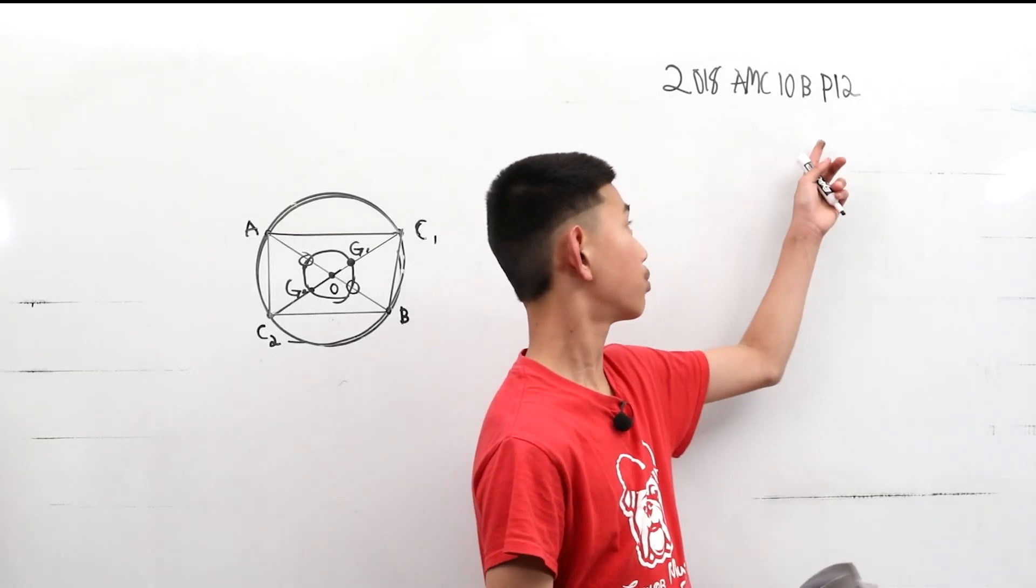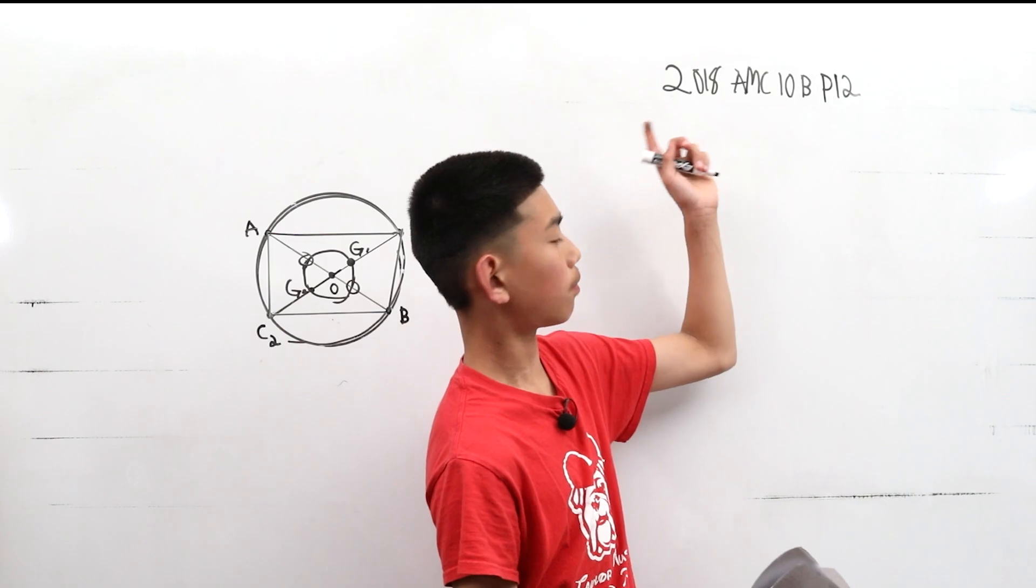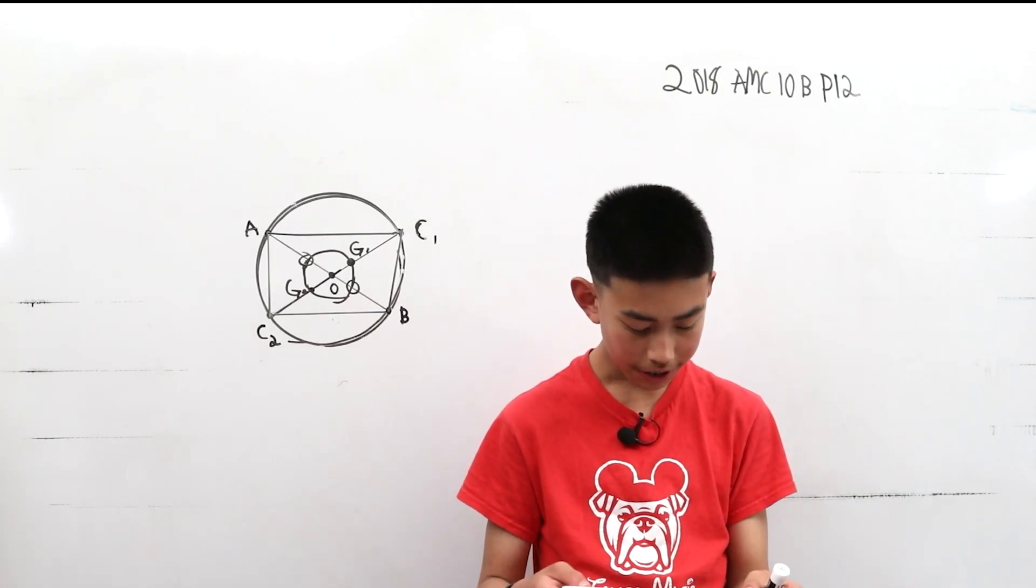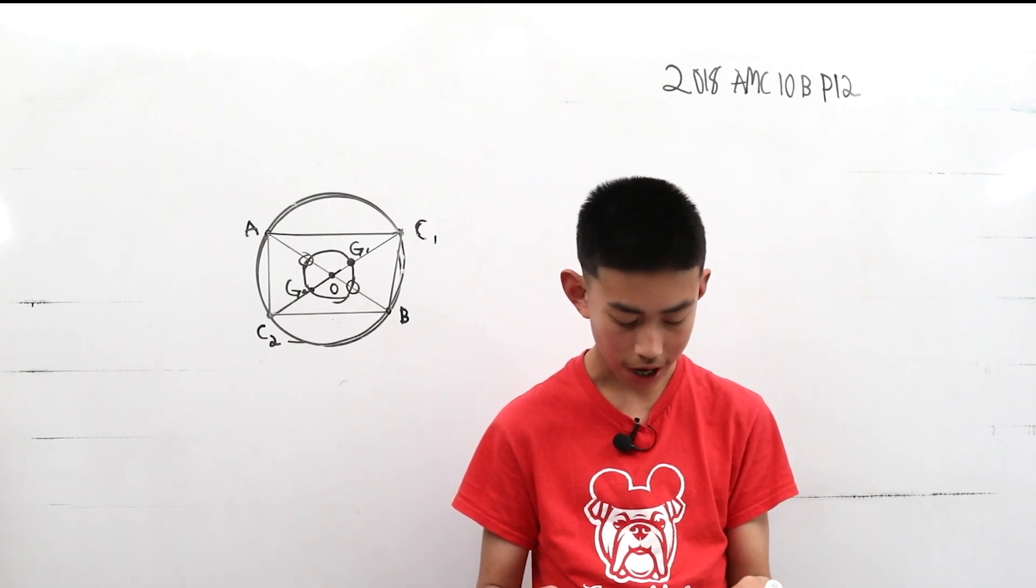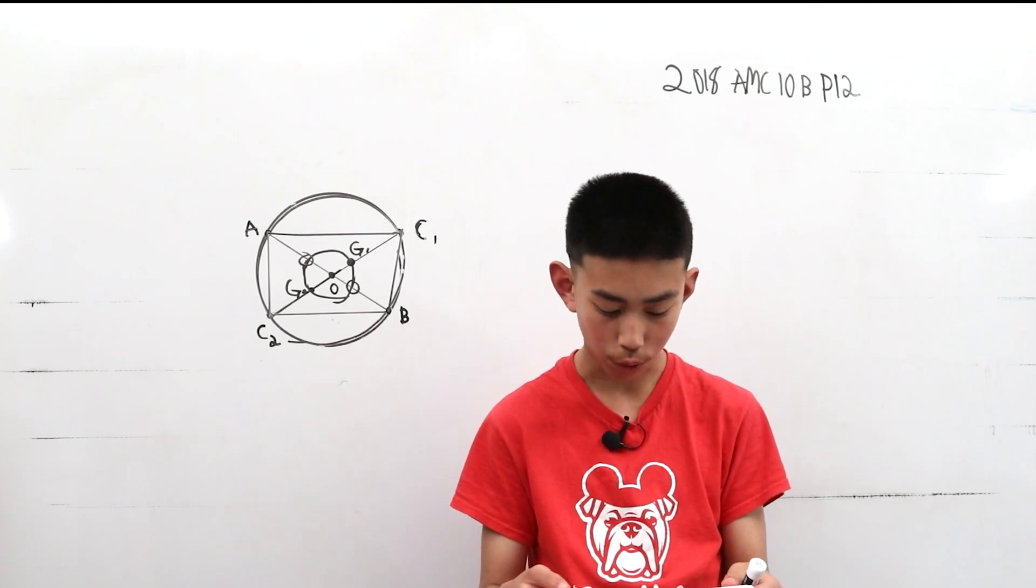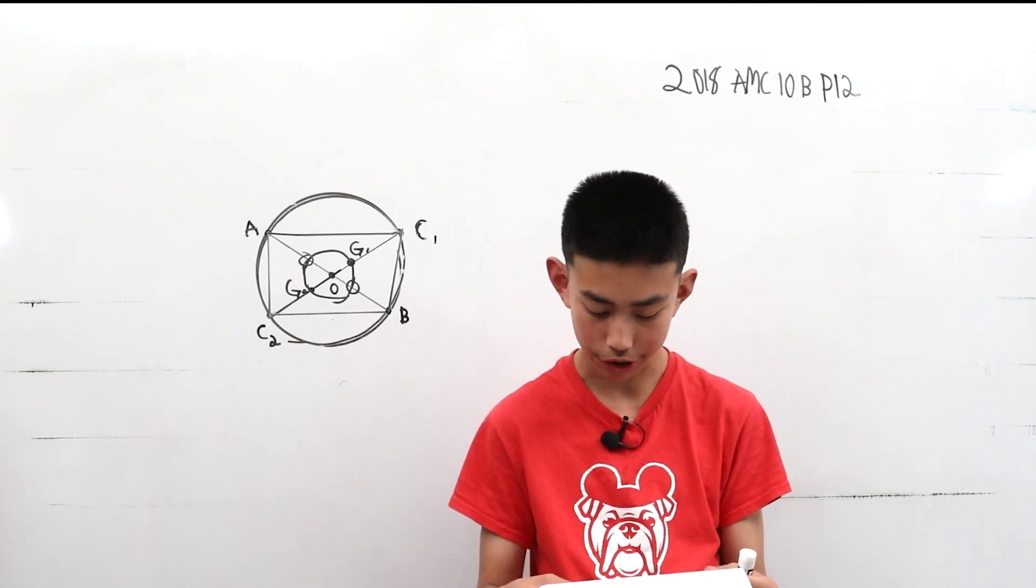We're solving problem 12 from the AMC 10B from 2018. Line segment AB is a diameter of a circle with AB equals 24. Point C, not equal to A or B, lies on the circle.